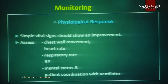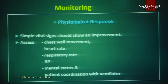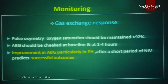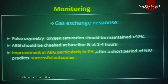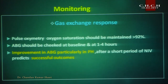Check patient coordination with the ventilator — if the patient is fighting, first look for any leakage, check the interface, check machine settings, and then consider shifting to invasive ventilation. For gas exchange response, pulse oximetry should be continuously monitored. In CO2-retaining or type 2 respiratory failure patients, keep SpO2 between 88 to 92%. Obtain ABG before starting NIV and after 1 hour — if acidosis is improving or CO2 is washing out, continue NIV.